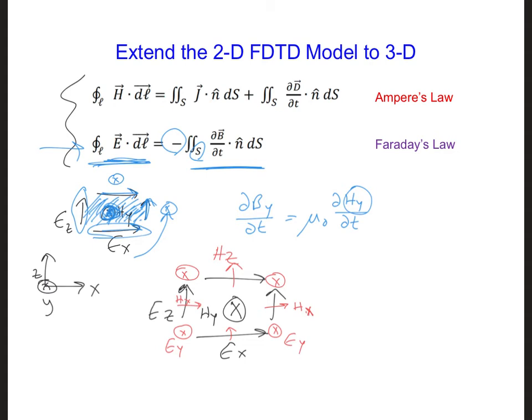Something else I like to do is circle the components that share the same integer indices. Since we're starting the grid on EX and EZ components in this plane, these six field components will all share the same I and K indices. Notice we have one of each: one EX, one EY, one EZ, and one HX, one HY, and one HZ.